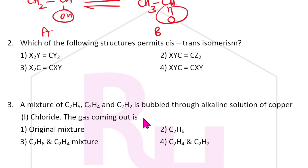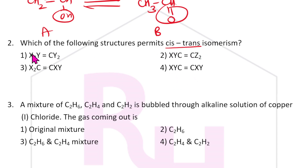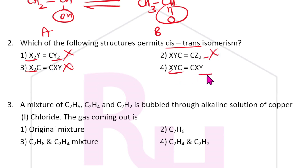Which of the following structures permits cis-trans isomerism? For cis-trans isomerism, the atoms or groups attached to the carbon should be different. X2 won't work, Y2 won't work — it must be XY and XY. So the answer for this question is the fourth one.